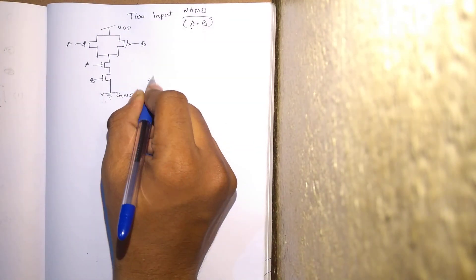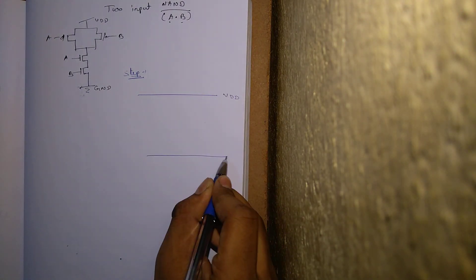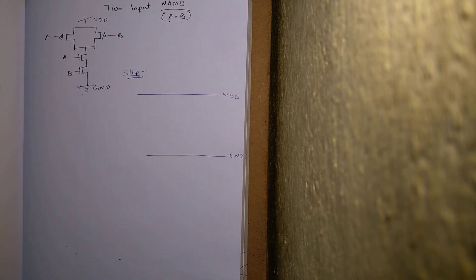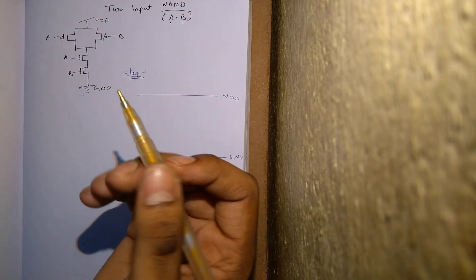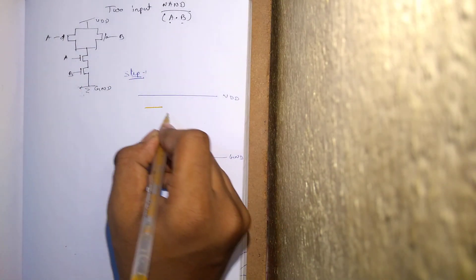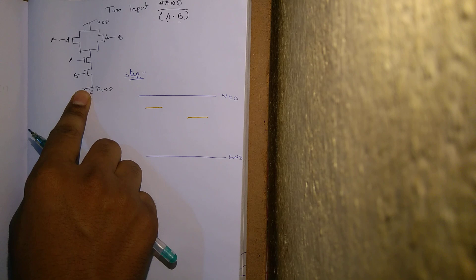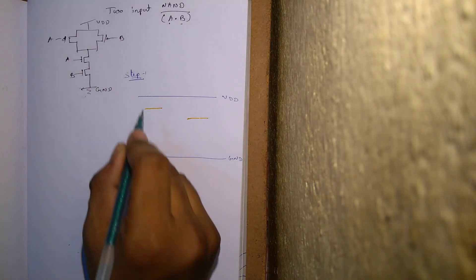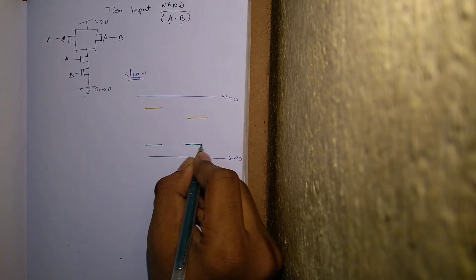Let us start with Step 1. We have VDD at the top and ground at the bottom. As we have two inputs and two transistors, the pull-up network uses PMOS, drawn using LO lines. Both A and B are in parallel in the pull-up network. In the pull-down network, A and B are NMOS transistors in series, drawn exactly beneath the PMOS lines.